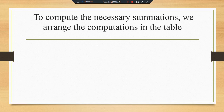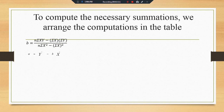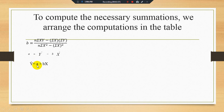Let's start to compute the necessary summations, arranged in a table. The formula for b is: b equals (n·summation xy minus summation x · summation y) divided by (n·summation x² minus (summation x)²). And for estimating a: a equals y-bar minus b·x-bar, where y-bar and x-bar are the arithmetic means of y and x. Our ultimate objective is the estimated line y-hat equals a plus bx.